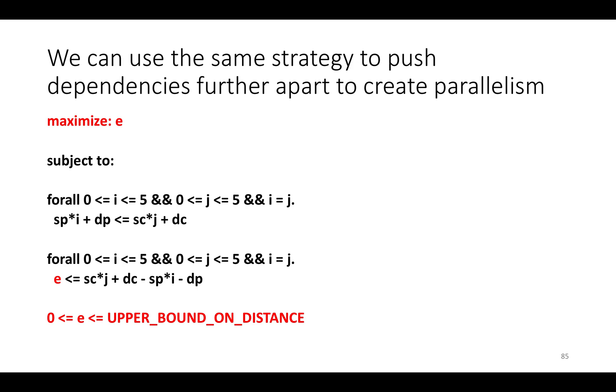We can actually use a similar strategy to push dependencies further apart to create parallelism. In the same way that we can create fresh variables that represent the time from production to consumption of values and minimize them to reduce the time from production to consumption of values, we can also create variables that represent the difference between production and consumption time of values and force that variable to be larger or try to maximize it in order to push dependencies apart and create parallelism. For example, we might say maximize e where e is a fresh variable and e is a lower bound on the difference between the production and consumption times. And then so that e isn't infinity and we get something tractable, we can create some upper bound on the number of loop iterations in the new schedule between production and consumption of values.